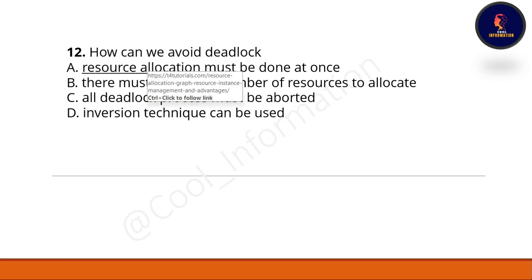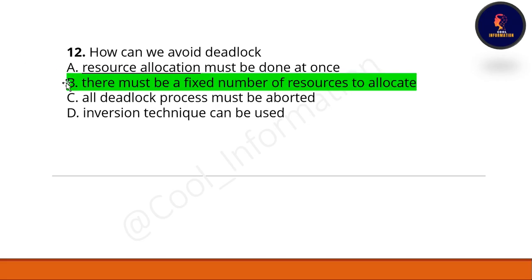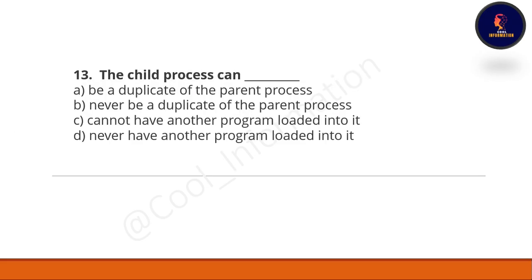Question 12: how can we avoid deadlock? Option A: resource allocation must be done at once. Option B: there must be a fixed number of resources to allocate. Option C: inversion technique can be used. The correct option is B — there must be a fixed number of resources to allocate.